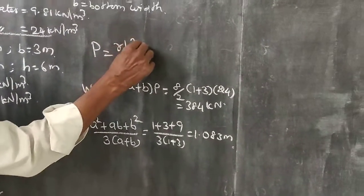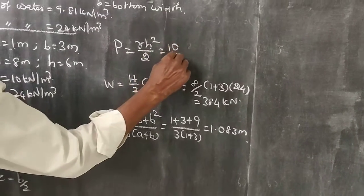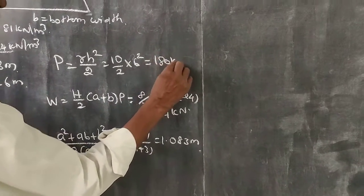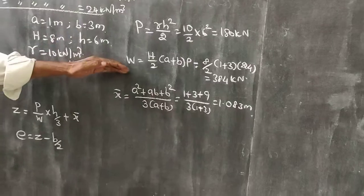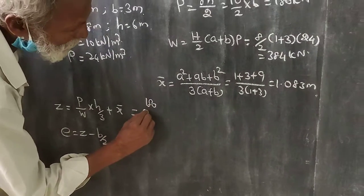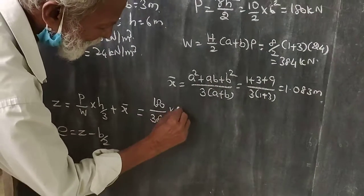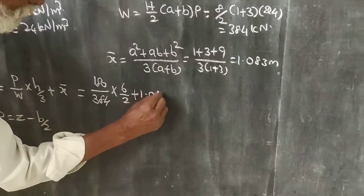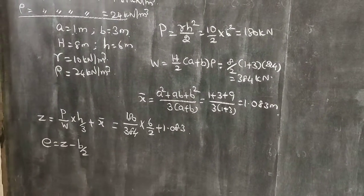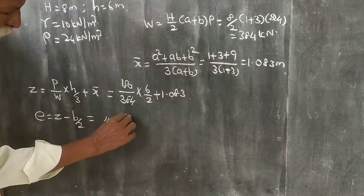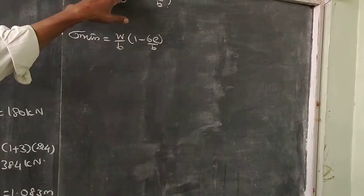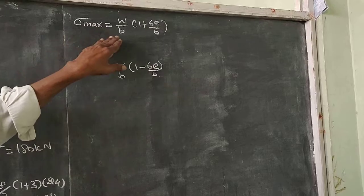P equals gamma H square by 2, which is 10 by 2 into 6 square, equals 180 kN. Substituting: x equals 180 by 384 into 6 by 2 plus 1.083. The left arm distance is calculated. Then e equals x minus B by 2, which is 3 by 2. Once e is found, substitute W to get maximum stress and minimum stress.